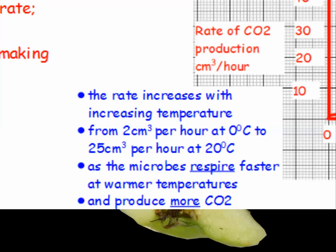Here are your four marks. The rate increases with increasing temperature — giving values from 2 cm³ per hour at 0 degrees to 25 cm³ per hour at 20 degrees. Now for the explanation: why do compost heaps make more CO2 when it's warmer? You've got the microbes respiring, and they respire faster at warmer temperatures. We know from the specification that microbes like moist, warm, oxygenated conditions. If they respire faster, they produce more CO2.